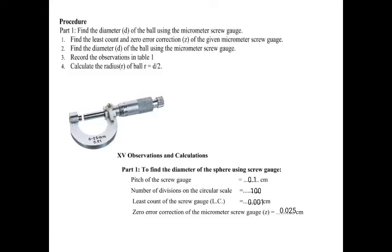Observation and calculation for Part 1: Pitch of the screw gauge is 0.1 cm. Number of divisions on the circular scale are 100, so the least count of the micrometer screw gauge is 0.001 cm. The zero error correction of the micrometer screw gauge Z = 0.025 cm.